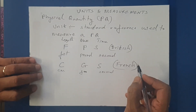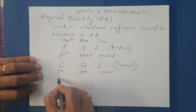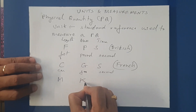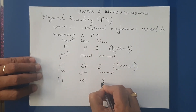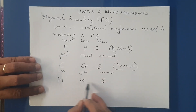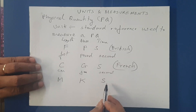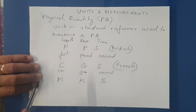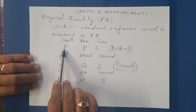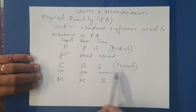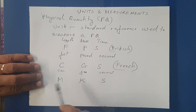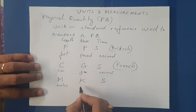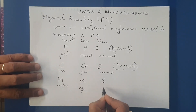The rest of the world used to measure length in meters, mass in kilograms, and time in seconds. This is called the MKS system. So the British followed FPS, French followed CGS, and the rest of the world followed MKS. In MKS, length is in meter, mass in kilograms, and time in seconds.